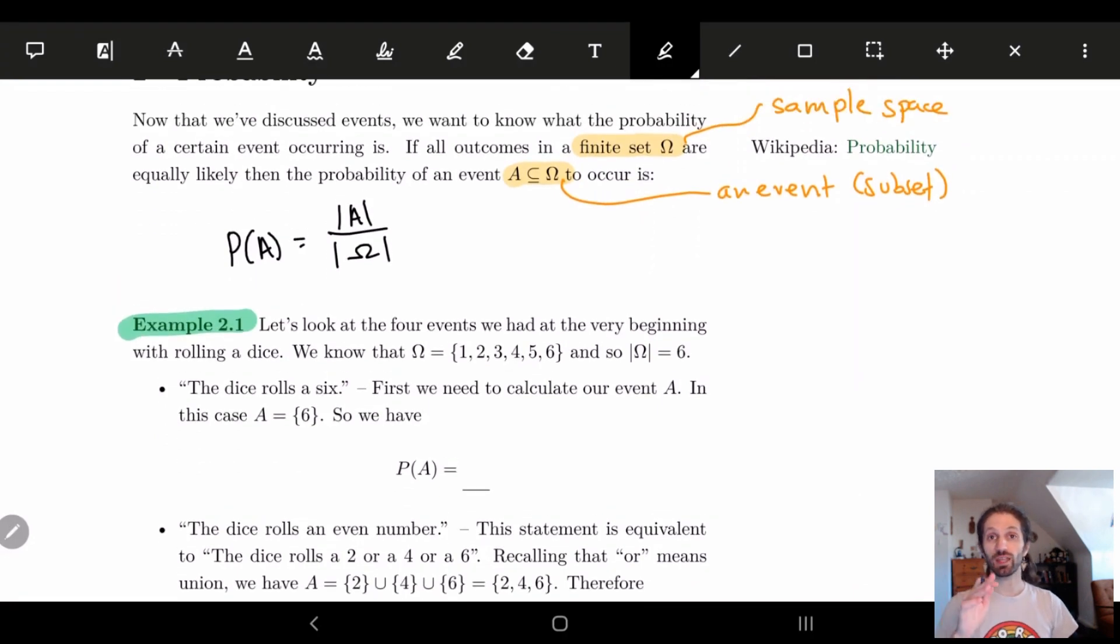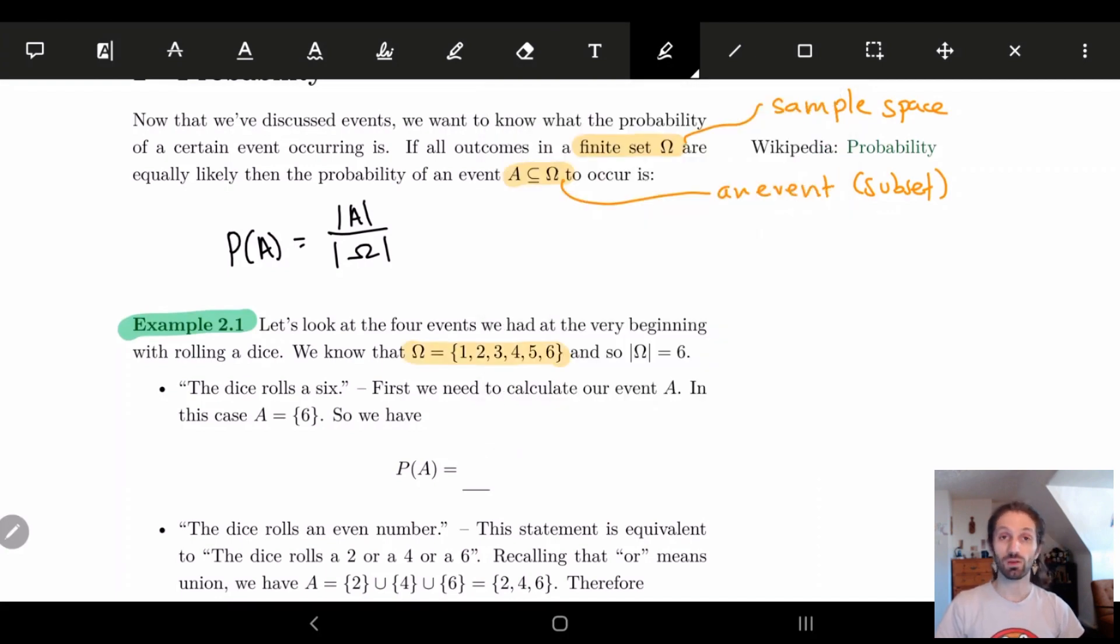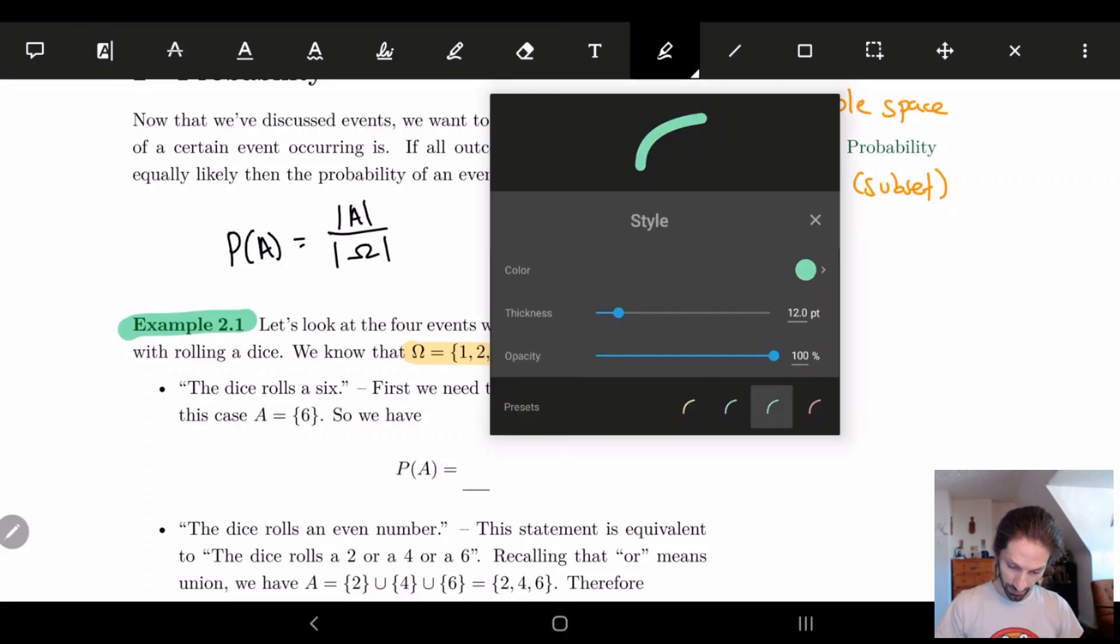And we're going to look at the same example that we saw in the last video. So we're going to roll a dice. So here, remember rolling a dice, that means we have six elements in our sample space: one, two, three, four, five, six. And that implies that my sample size is six, so I have six elements in my sample set. And so let's go one at a time and kind of see what happens.